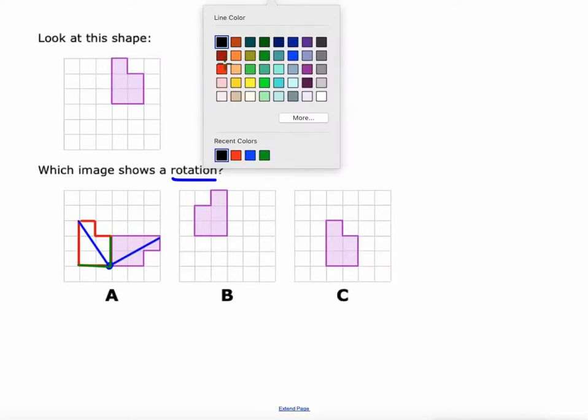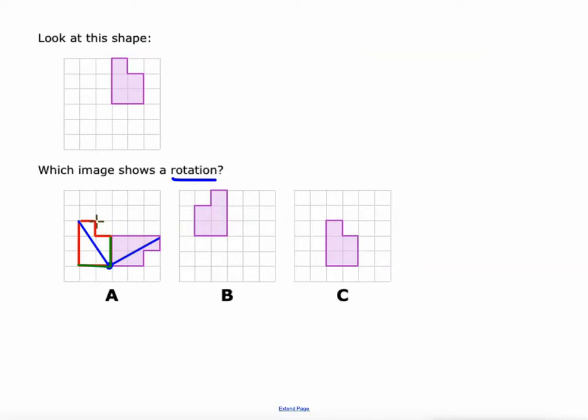And let's do one more. How about, I'll do orange. Let's go from this point to the center of rotation to the corresponding point on the new shape. Another 90 degree angle. Because this would be a 90 degree rotation of this shape. If I rotate it 90 degrees around that point, it matches. So point A. Or shape A.